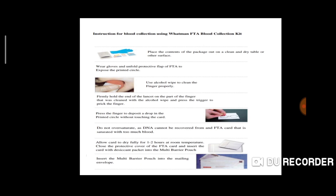Place the contents of the package on a clean, dry table surface. Wear gloves and unfold the protective flap. Recline the flap of the FTA card to expose the printed circle. Without gloves, you can put DNA on the card from your hands.